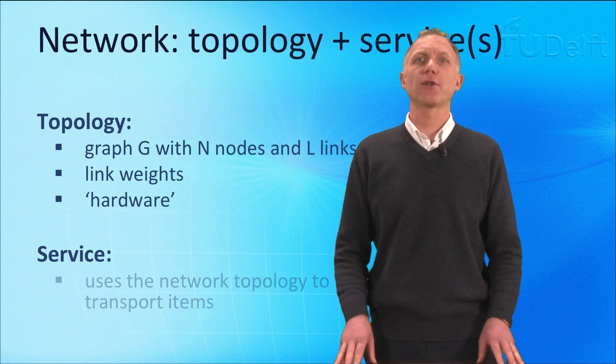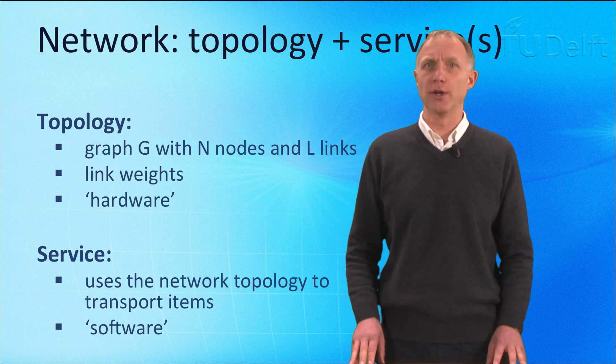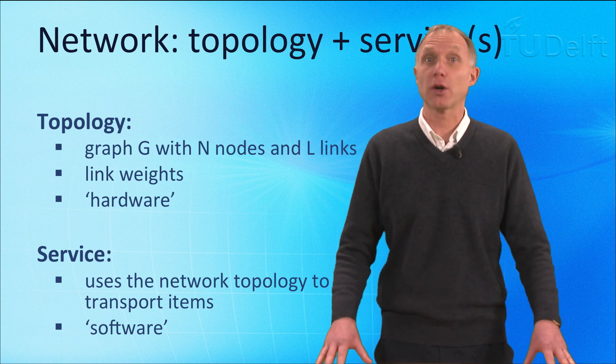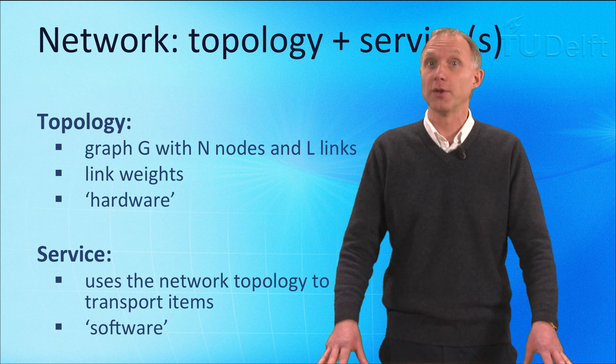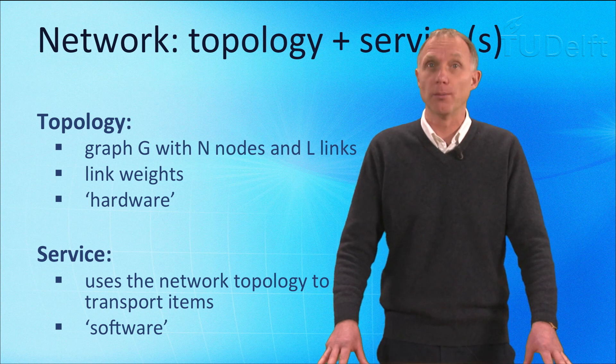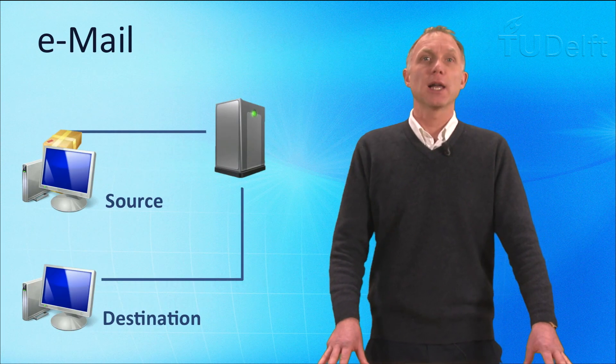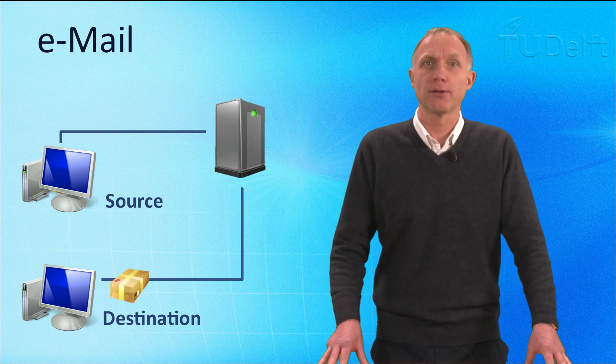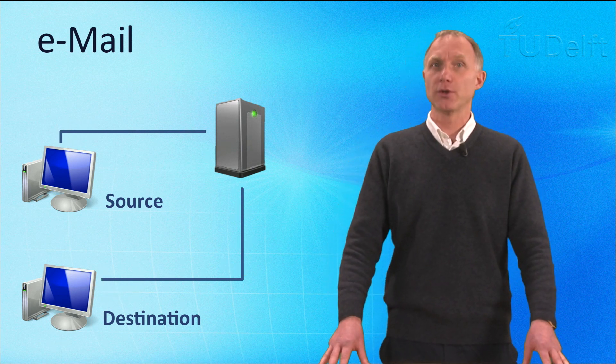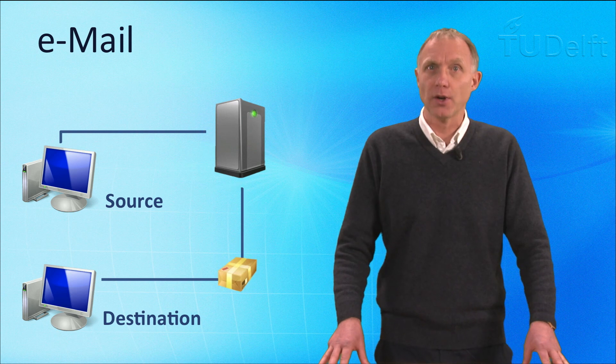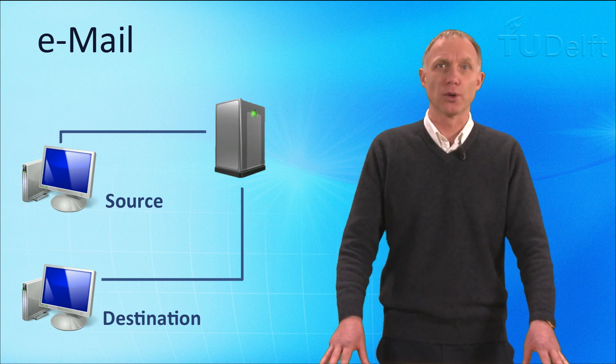So far we have concentrated on the topology of the network. However, a network also has a purpose. In other words, the network consists of one or more services. For instance, electronic mail is a service in the internet. The mail application maps your email into IP packets that are transported in the internet from source to destination.